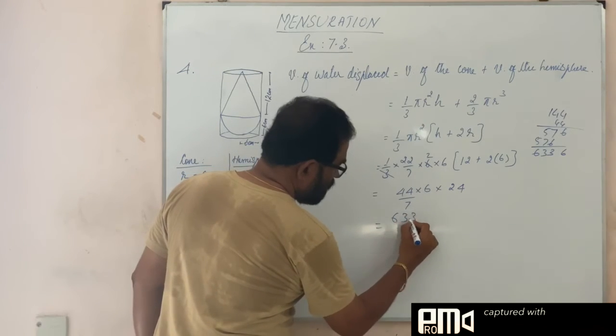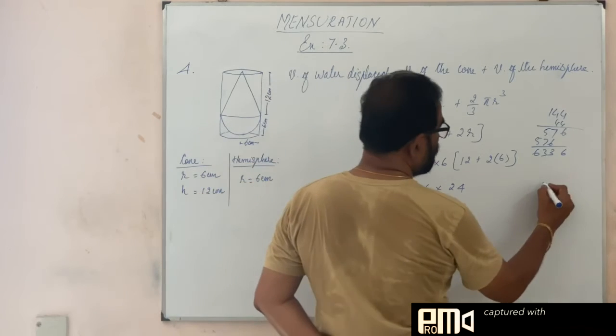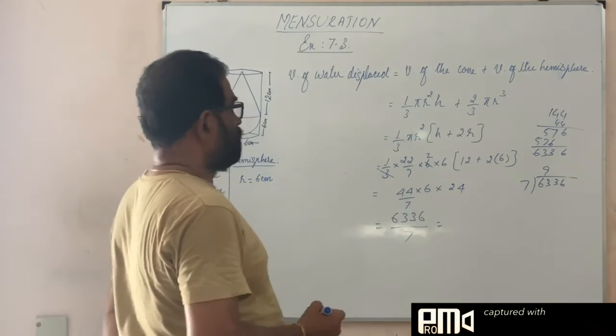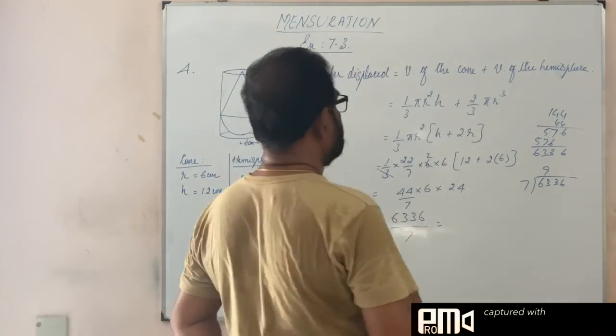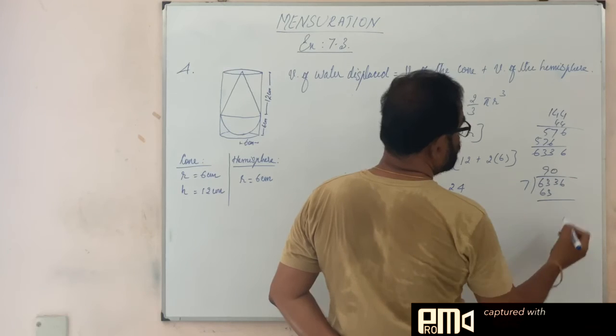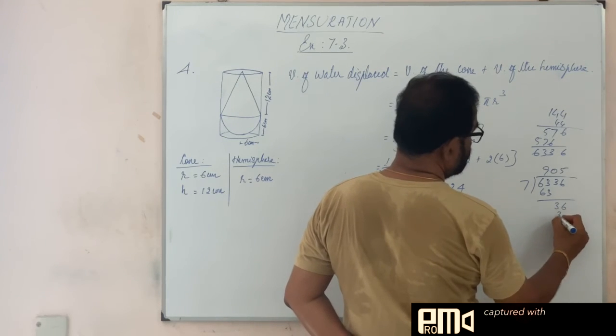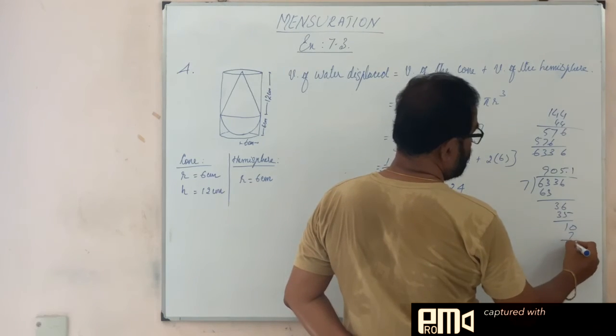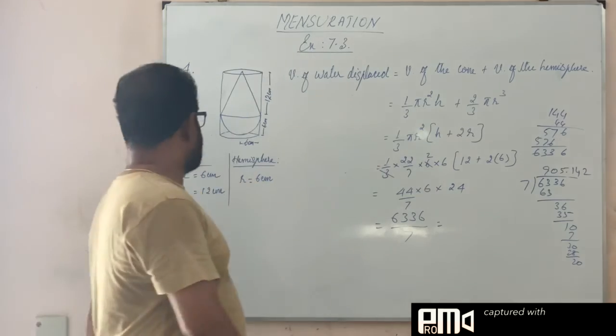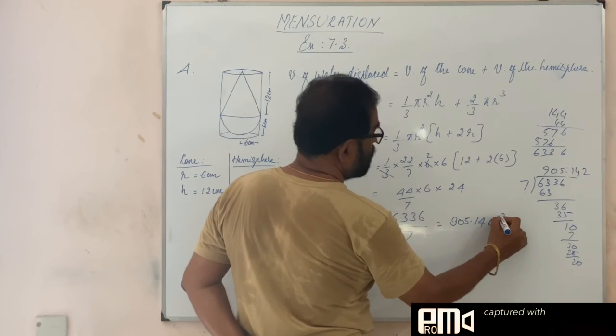So this is 6336 divided by 7, so let's do it. So here it is 3, so we are on 0, then 5. 0, 1, 2, then it comes to 2, so to stop here. OK, it's 905.14 centimeter cube.